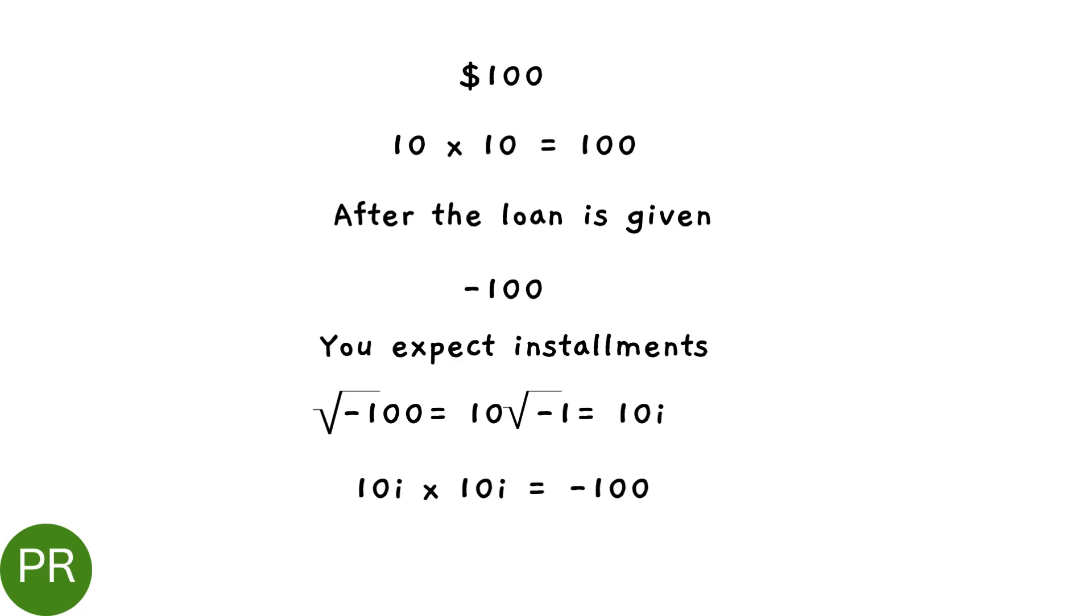So what do you do? You can take a square root of minus 100. And again, 10 comes out and minus 1. And minus 1 square root is an imaginary number denoted by the symbol i. So you expect 10i installments over 10i weeks.